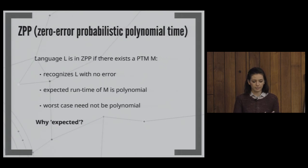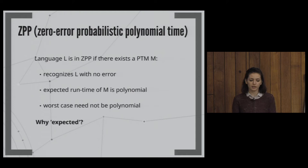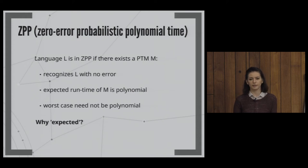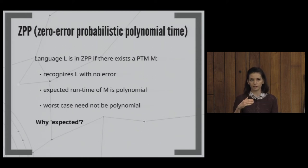ZPP corresponds to Las Vegas algorithms. It recognizes a language with no error, has expected polynomial runtime, but in the worst case could fail to terminate. I explained this earlier using two one-sided error algorithms alternated together, with the probability of never finishing dropping exponentially in the number of steps.